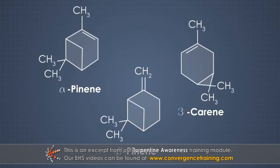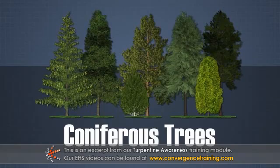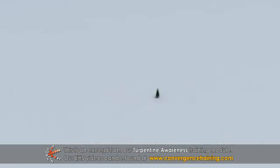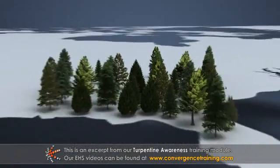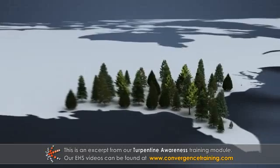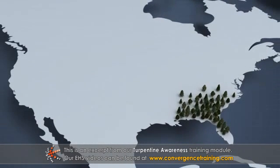Turpentine is a volatile mixture of hydrocarbons that can be acquired from several different coniferous trees. In the United States, the primary sources of commercial turpentine are the longleaf and slash pine species that are native to the southeast.